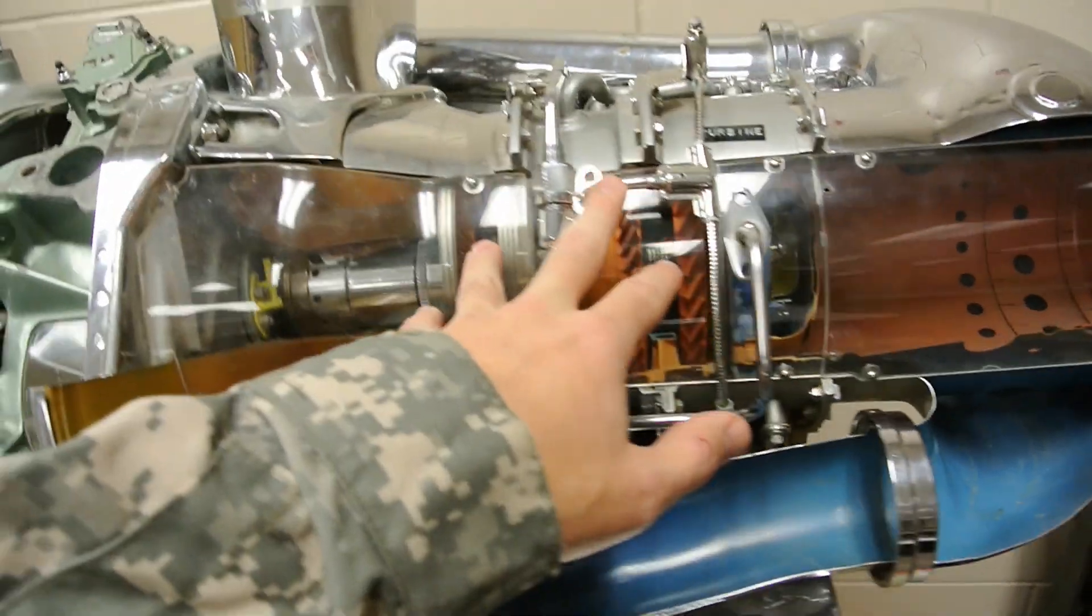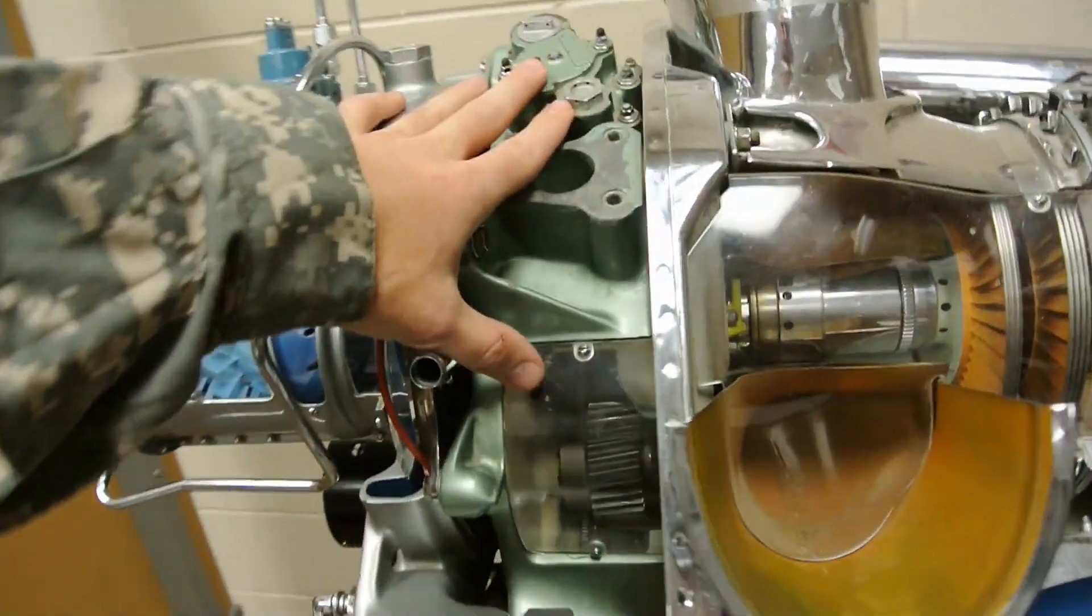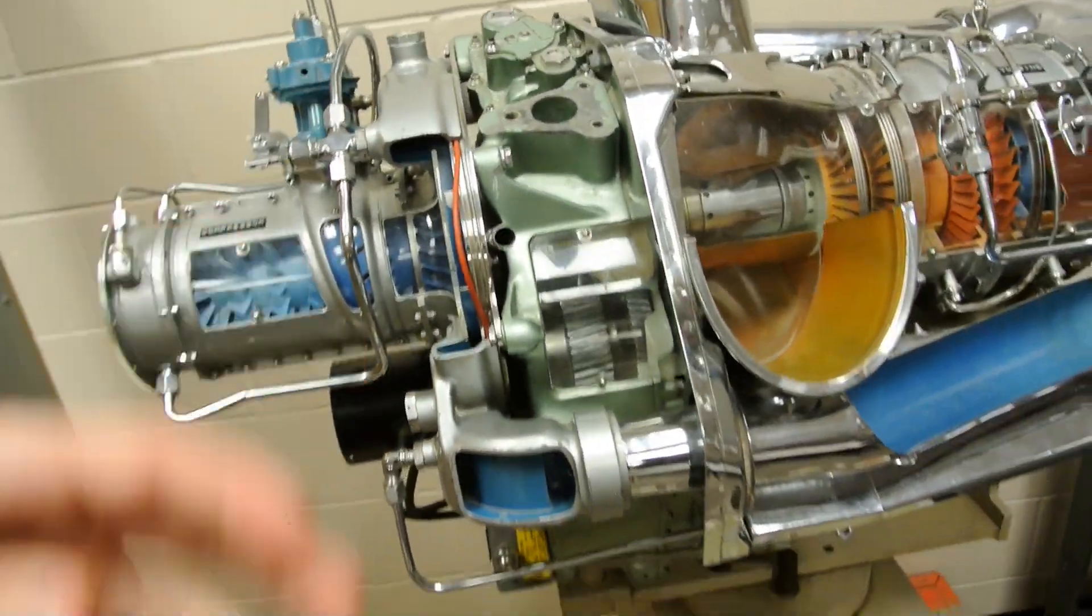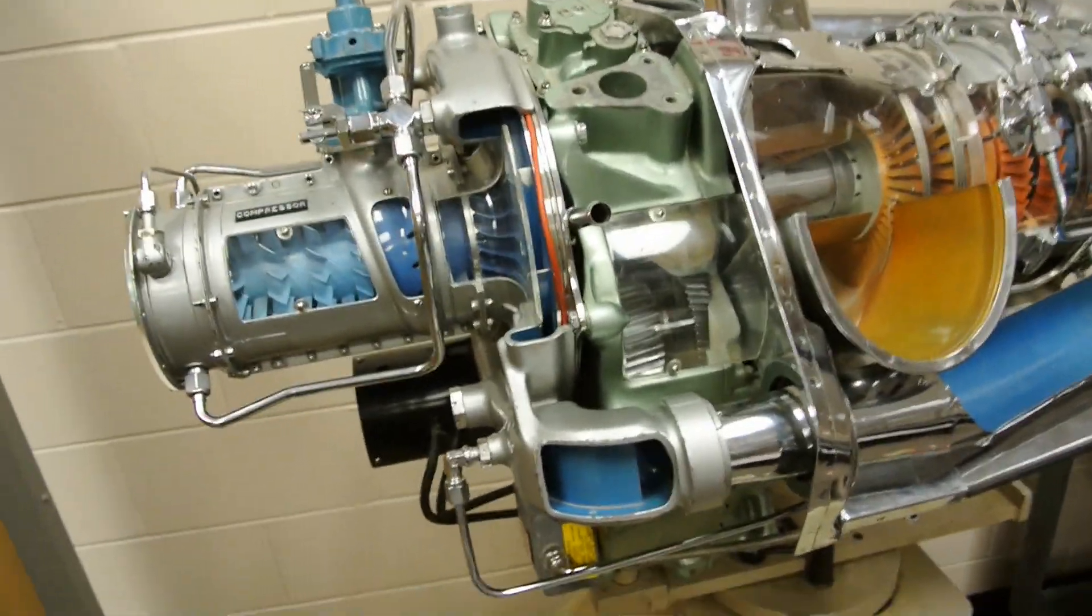It's got four main sections: the compressor, the combustion chamber, the turbine, the power turbine, and then in the middle here is the accessory gearbox area where all the oil pump and all those cool things are operated out of.